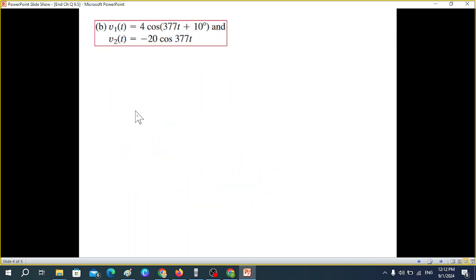Part B. The only difference is that we have a negative sign here. We'll have to take care of that. This one v1(t) = 4 cos(377t + 10°) goes to phasor straight away. No problem.